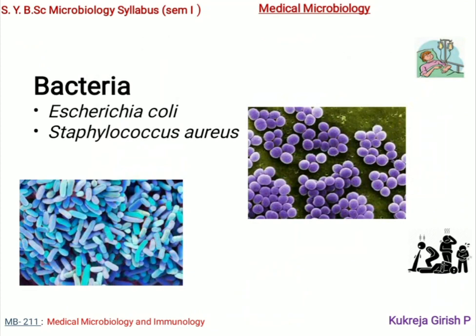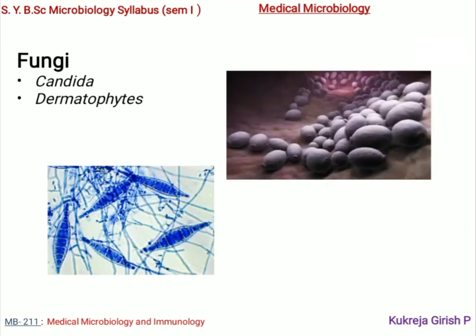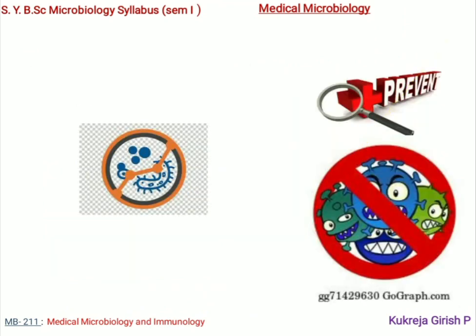Some representative pathogens we will study in this course include, in bacteria: Escherichia coli, a typical gram-negative bacterium, and Staphylococcus aureus, a typical gram-positive bacterium. We will also be studying two fungi: Candida and Dermatophytes. All four will be studied with respect to all the characteristics mentioned earlier.